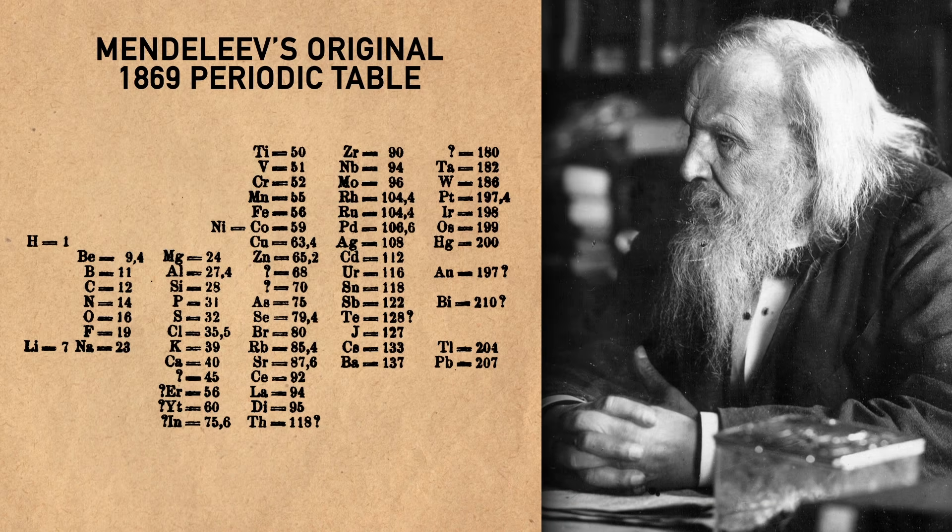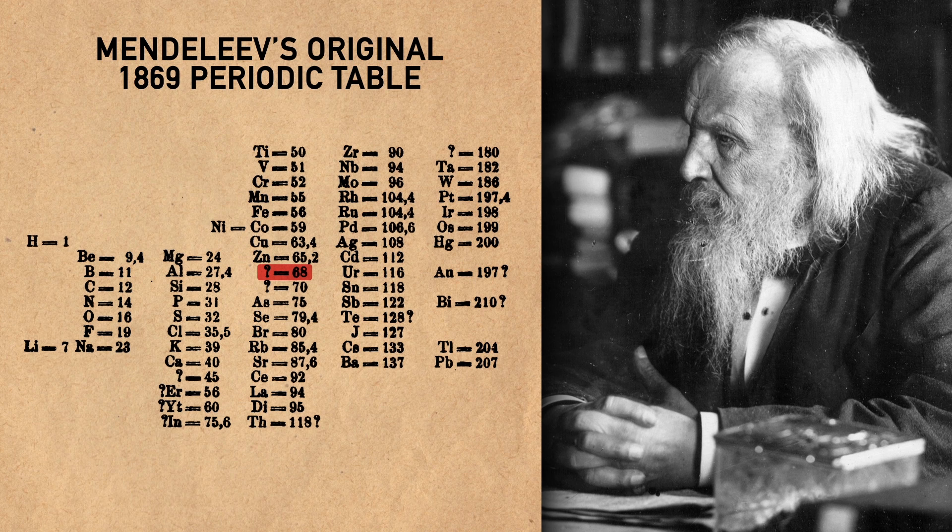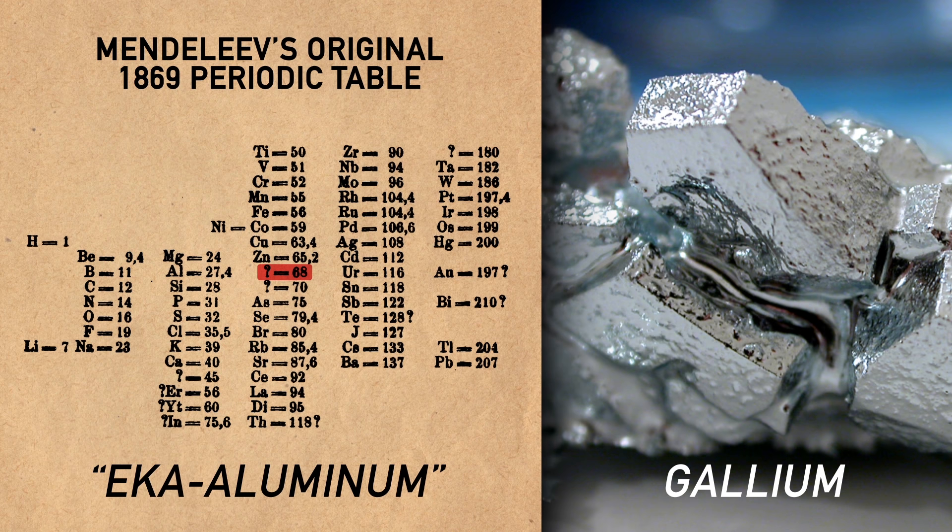For example, let's take a look at Mendeleev's original 1869 periodic table. See this hole right here to the right of aluminum? Mendeleev predicted that an element that was similar to aluminum existed, but had not yet been discovered. He called it eka-aluminum. When gallium was discovered a few years later, Mendeleev's predictions about the element's properties proved to be remarkably accurate.